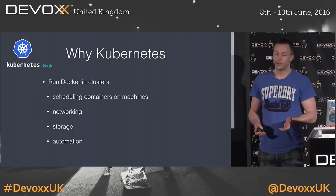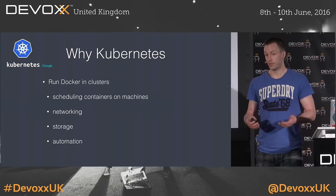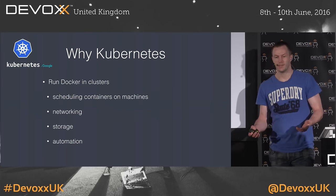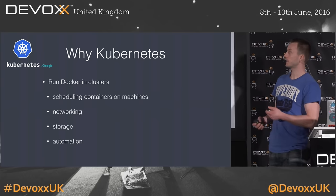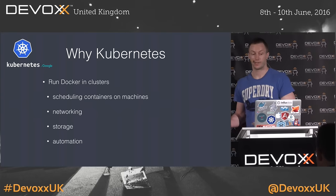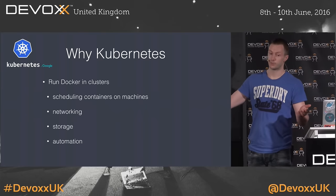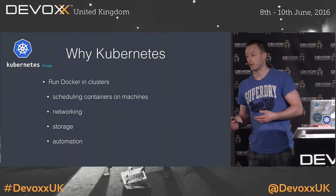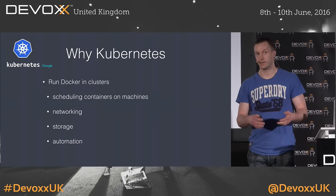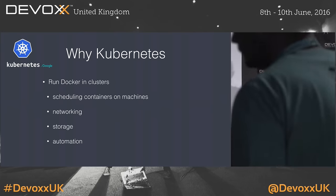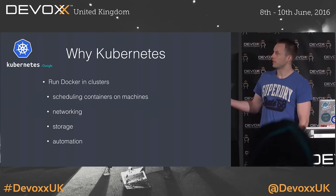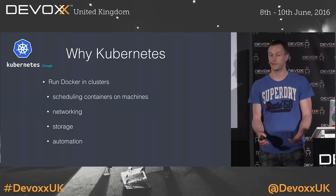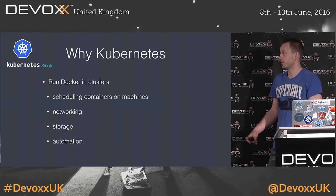If you use Docker, you know that Docker is mostly about running containers on your own machine, on a single machine. It's all fairly limited, and there's definitely not something to actually run containers in a cluster, to take care of failover, to take care of networking and storage and stuff like that. If you really want to run containers in production, you need something like Kubernetes to actually make that work.